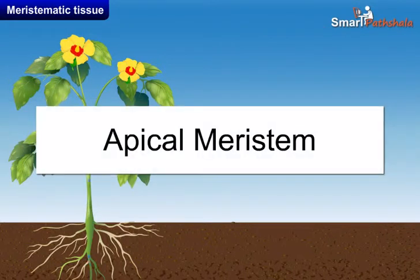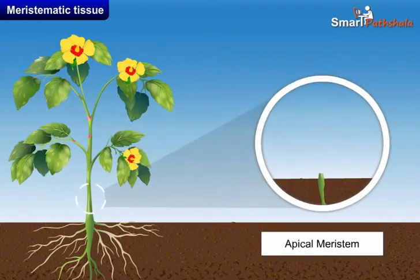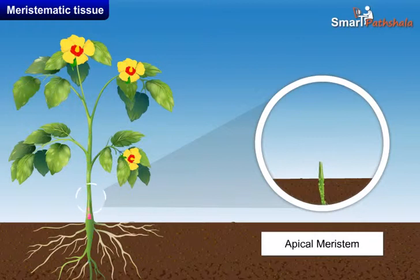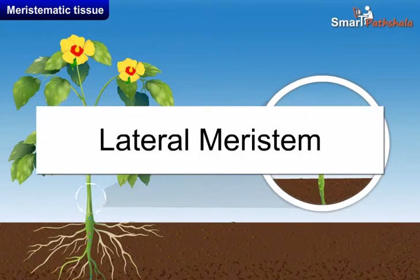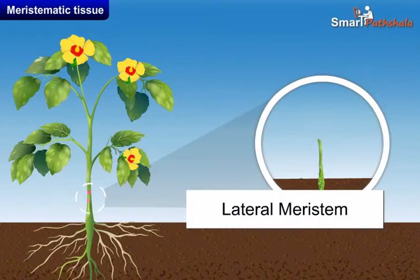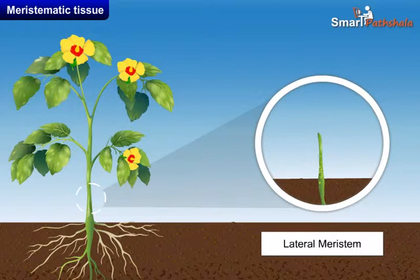A) Apical meristem: Apical meristem is present at the tips of root apex, stem apex, leaf buds, and flower buds. They are responsible for growth in length, that is, primary growth.